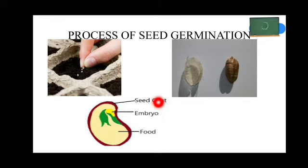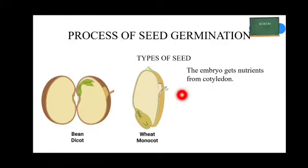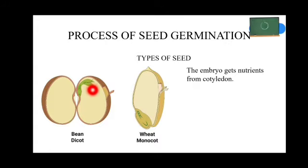The embryo has a tiny plant in it. The cotyledon gives nutrients to the embryo. While speaking about cotyledon of a seed, there are two types: monocotyledon and dicotyledon. Examples of dicotyledon seeds are peas, almonds, cashew nuts, etc.